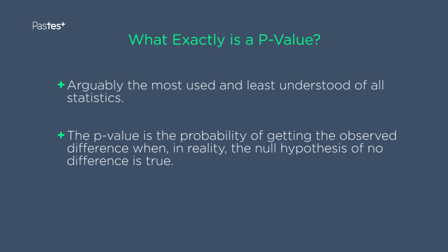So to repeat, the p-value is the probability that the difference you've just observed in your study could have occurred when actually there is really no difference between the groups, that is, the null hypothesis of no difference, is actually true.